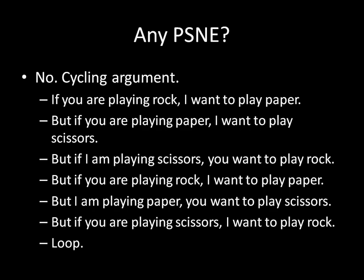There is clearly no pure strategy Nash equilibrium, and we can appeal to a simple cycling argument. Imagine you're playing rock — I want to play paper. But if you're playing paper, I want to switch to scissors. And if I'm playing scissors, you want to switch to rock. But if you're playing rock, I want to switch to paper. And if I'm playing paper, you want to play scissors. And if you're playing scissors, I want to switch back to rock. We've gotten into a full loop, and that takes care of every case.